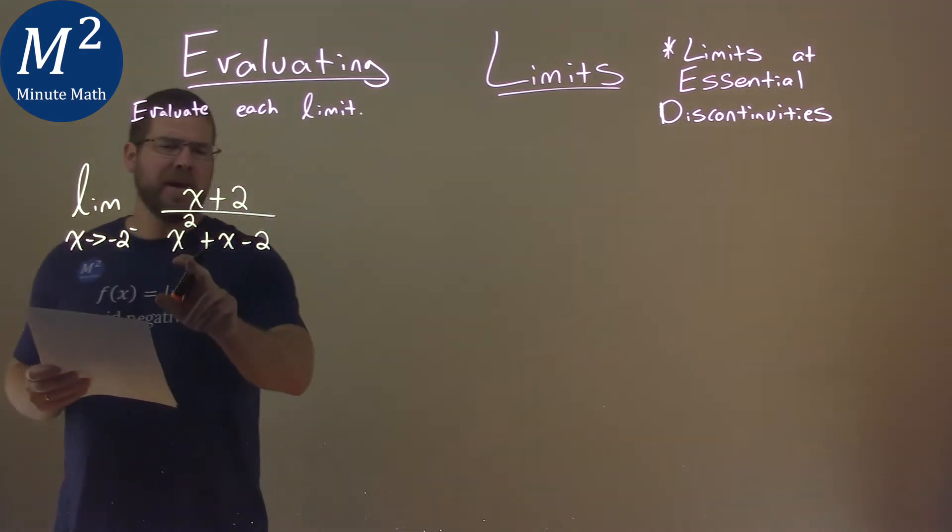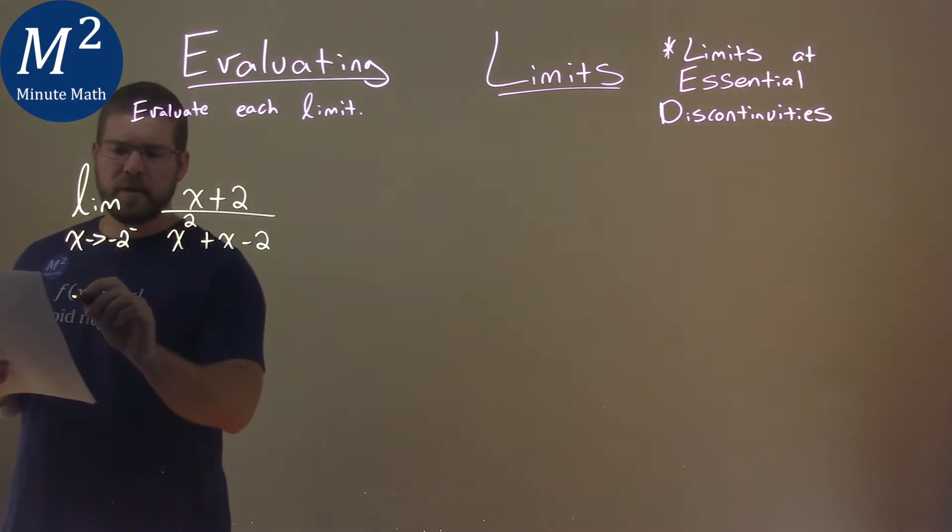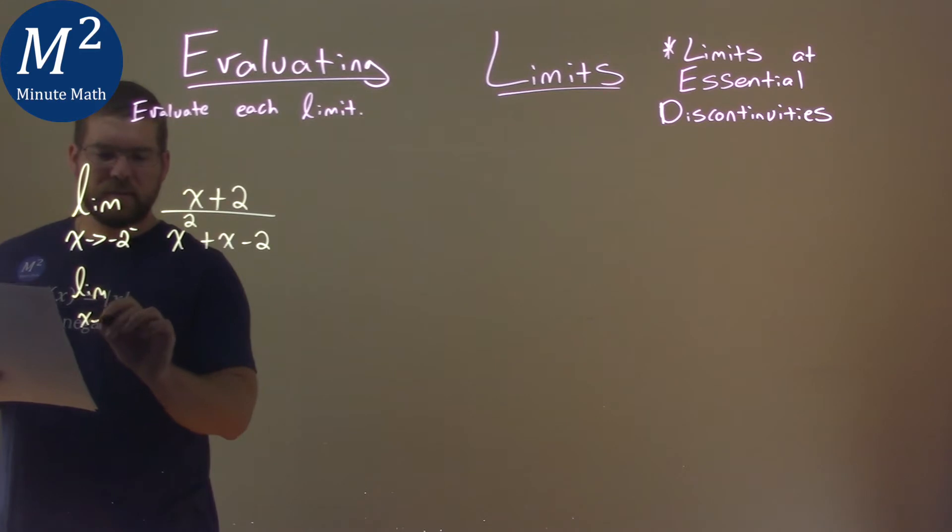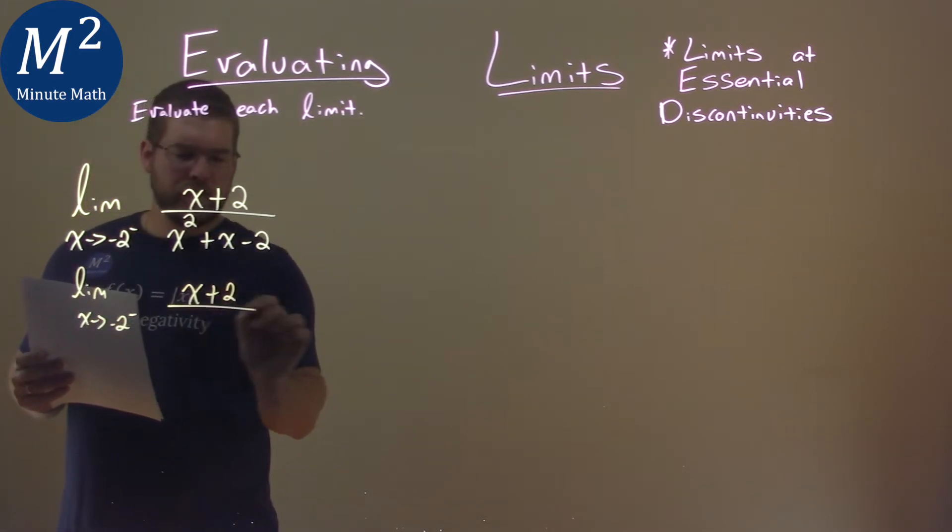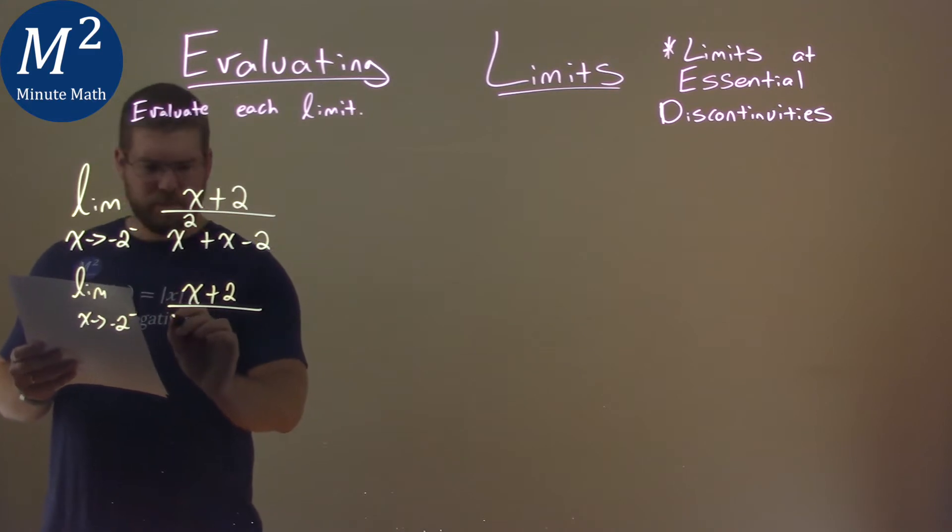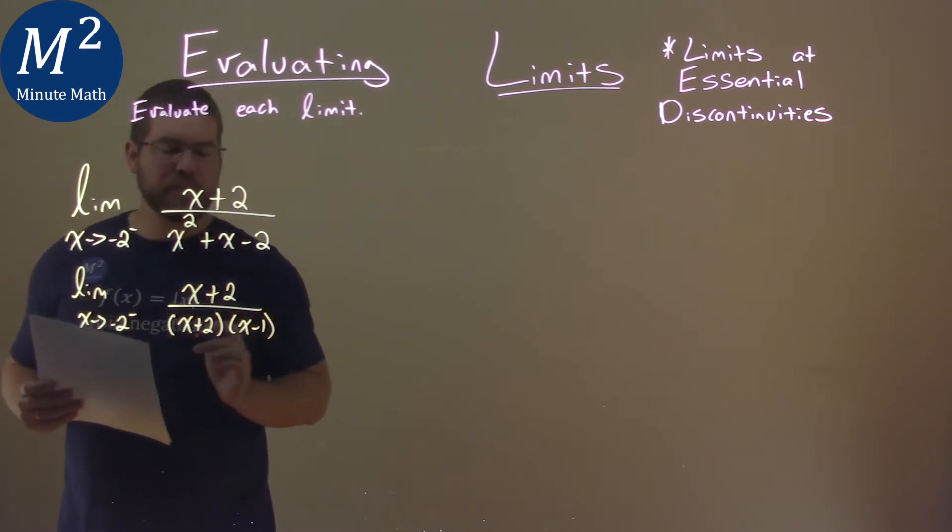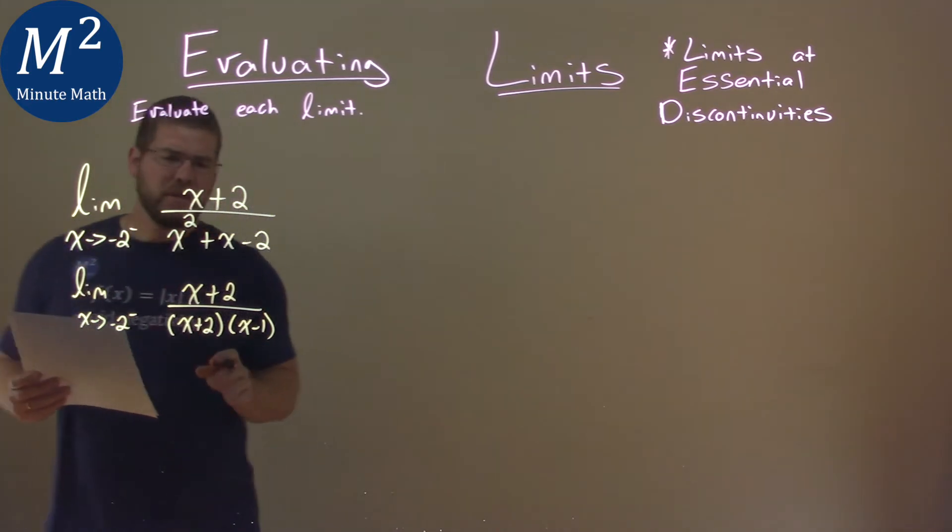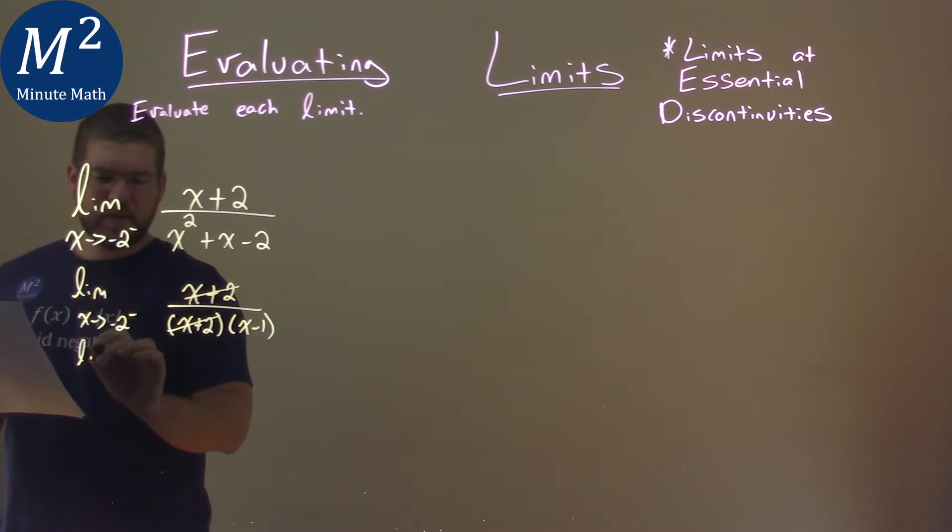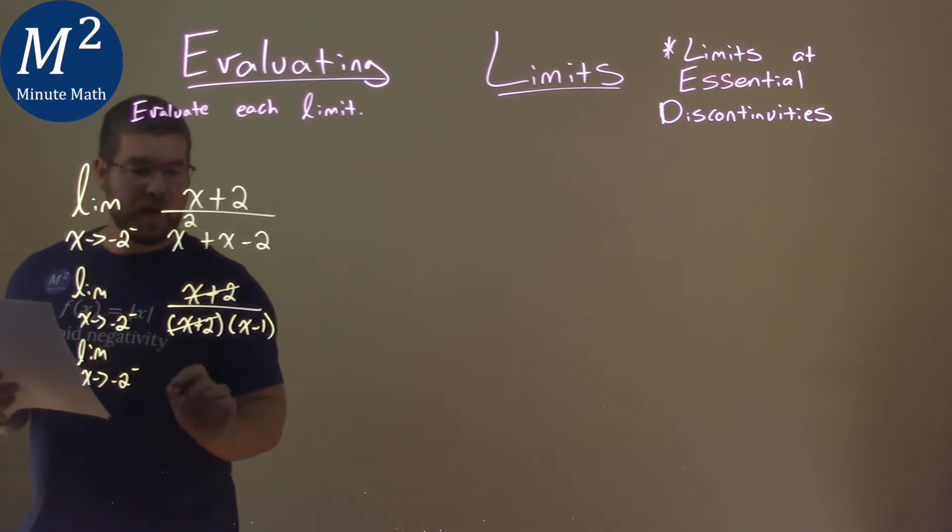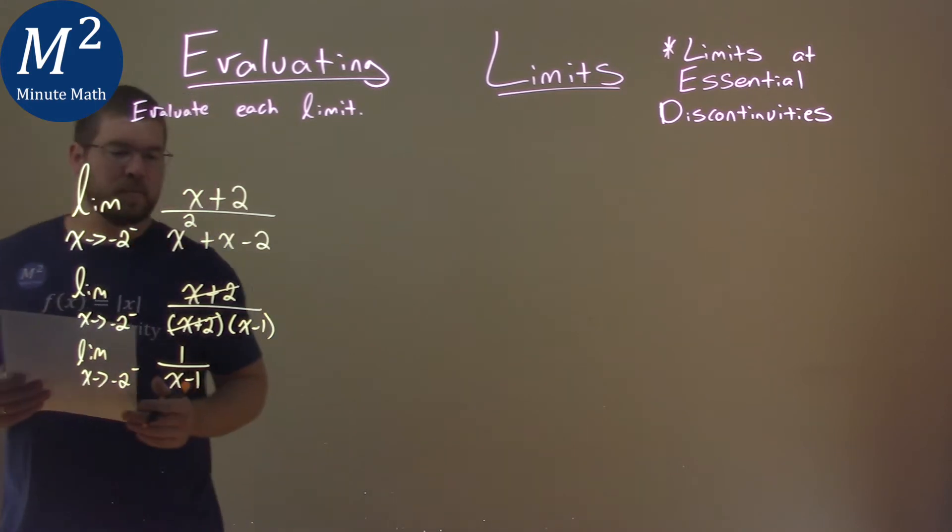Now one of the first things I notice here is I want to try to factor out this denominator, see if something happens here. So we take the limit as x approaches negative 2 from the left, we have x plus 2 in the numerator, but the denominator factors out to be x plus 2 times x minus 1. And so it's a little easier to see that these x plus 2s cancel, and really here, the limit as x approaches negative 2 from the left is really just of 1 over x minus 1.